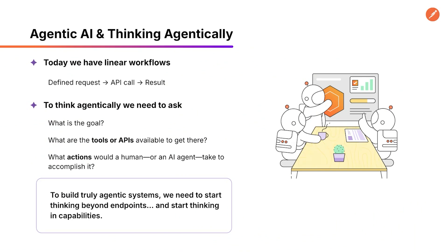Let's start with a question I think a lot of us ask, which is: how do I actually build an agentic workflow? The hype is all around us, and it's very real. Agents can reason, they can act autonomously, and they can plug into all sorts of tools. But the practical how of how we get started is often less clear. This is partially because most of today's systems are still designed around linear workflows. You call an API, and you get a result. It's deterministic, it's hard-coded, and it can sometimes be very brittle.